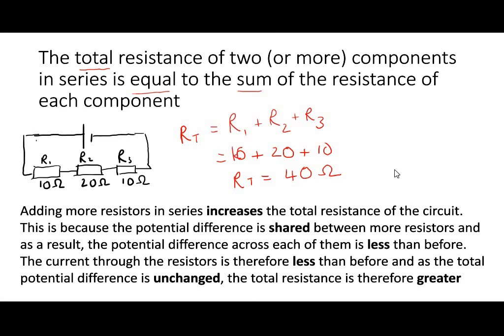As we add more resistors in series, this increases the total resistance of the circuit. This is because the potential difference is shared between more resistors. If the battery is 4.5 volts, that's going to be shared between the resistors. As a result, the potential difference across each of them is less than before, and therefore the current through those resistors is less as well — they're getting less energy, so there is less potential difference and therefore less current.